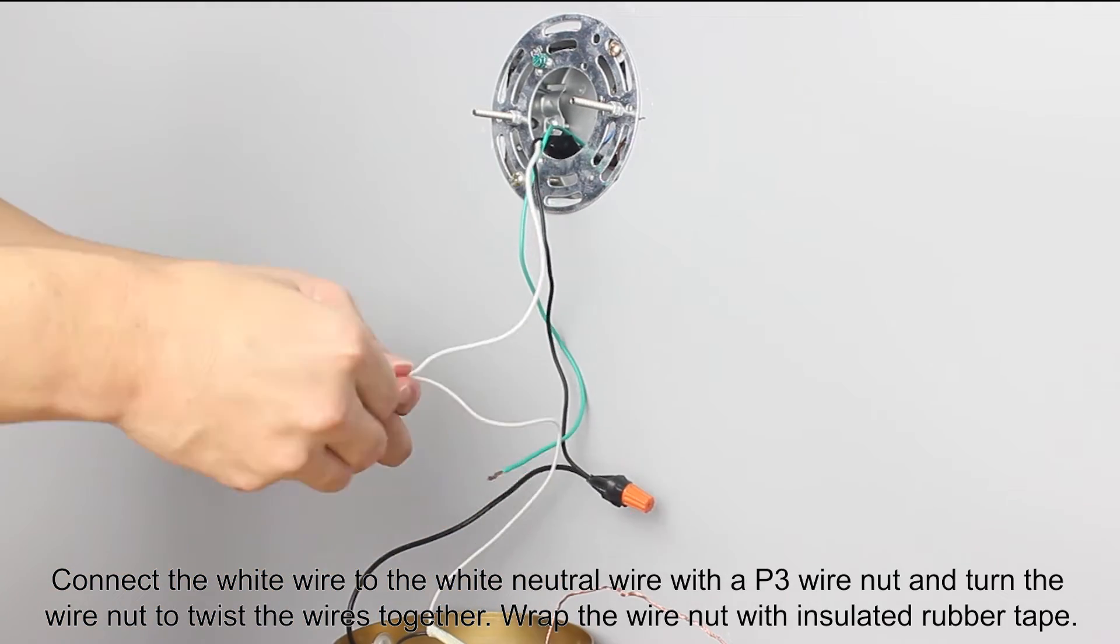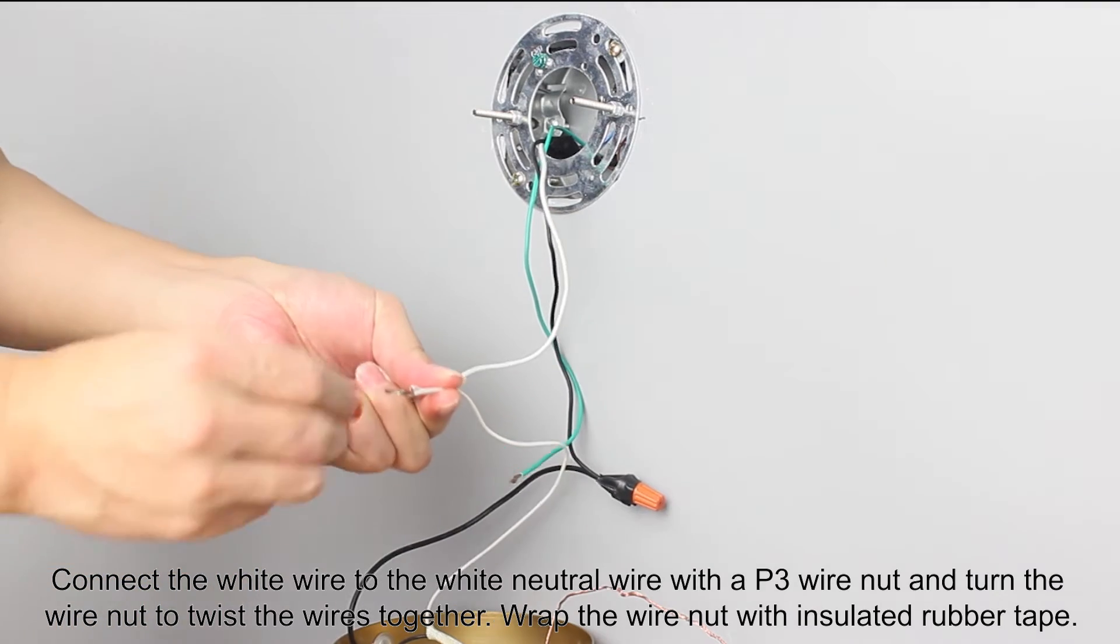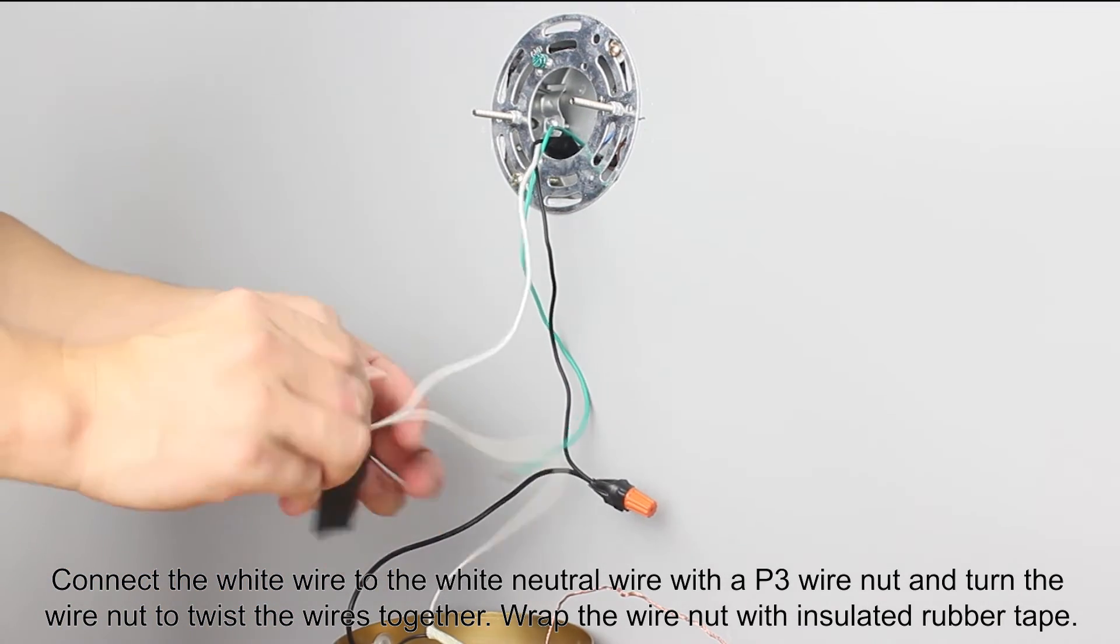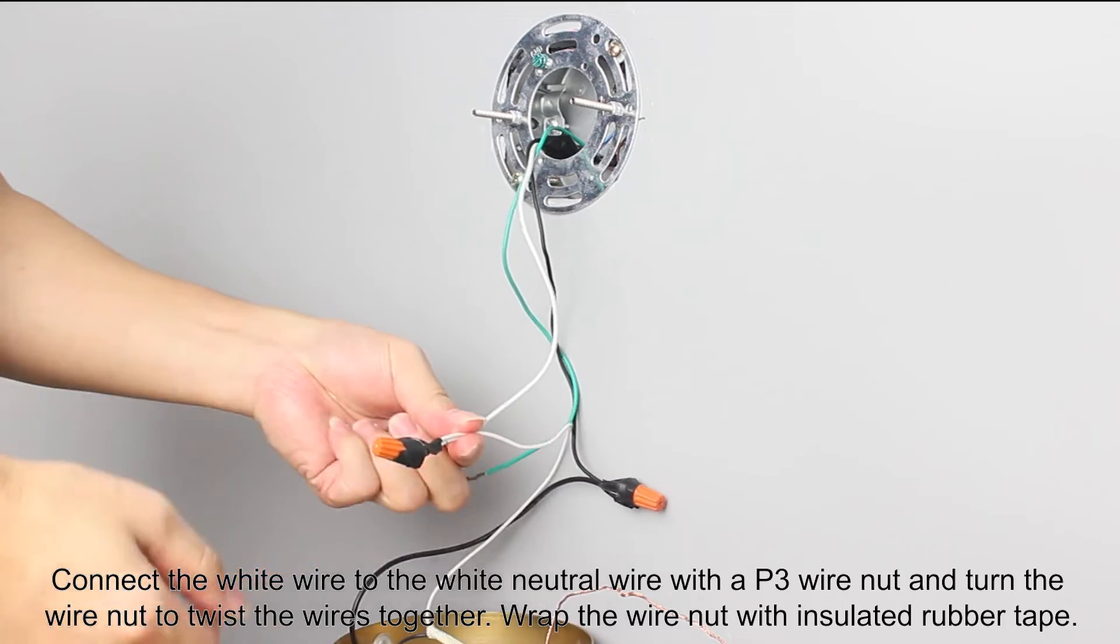Connect the white wire to the white neutral wire with a P3 wire nut and turn the wire nut to twist the wires together. Wrap the wire nut with insulated rubber tape.